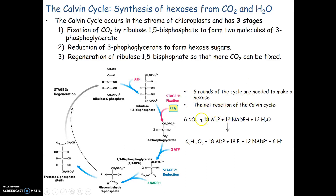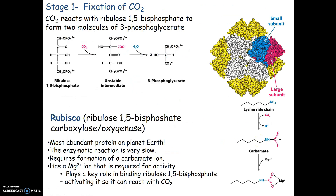Note also that this is going to use a lot of energy — we have to use 18 ATP to make one hexose sugar. We're also going to do a lot of reduction, and in that process we're going to oxidize our NADPH to create NADP+.